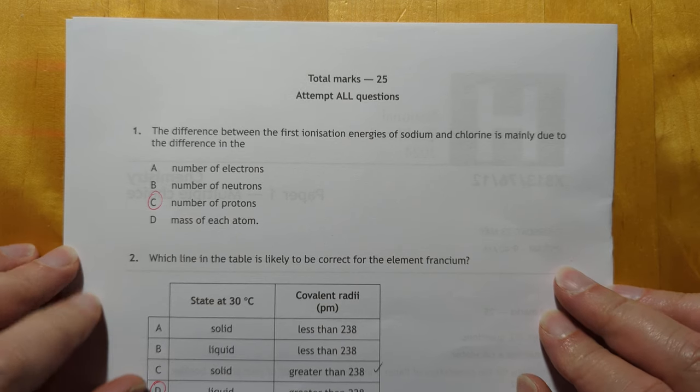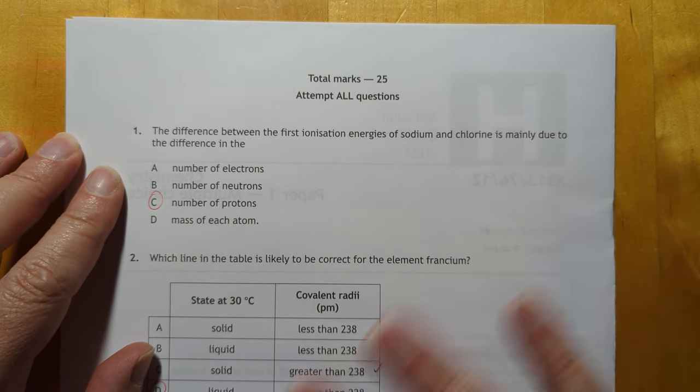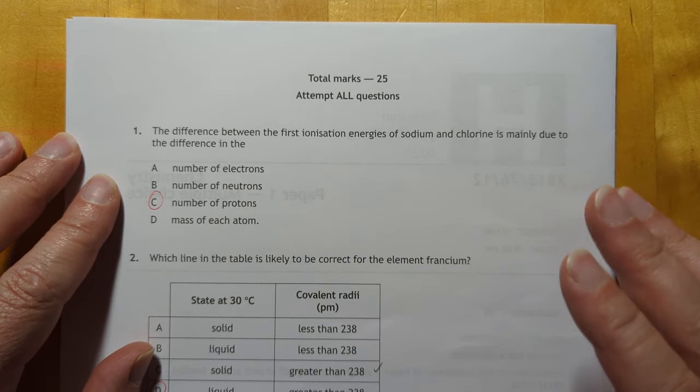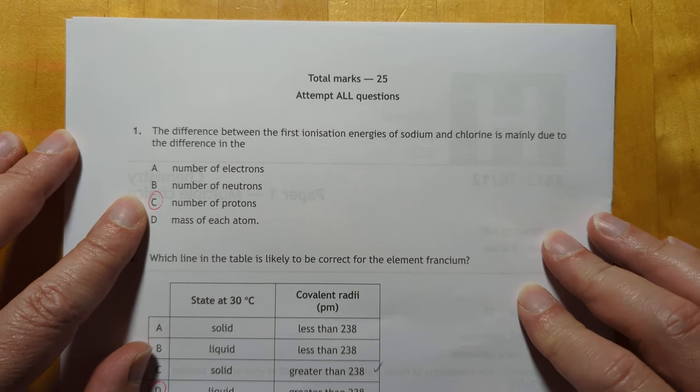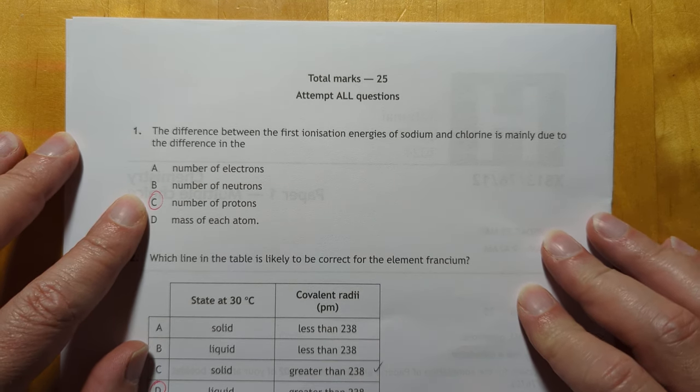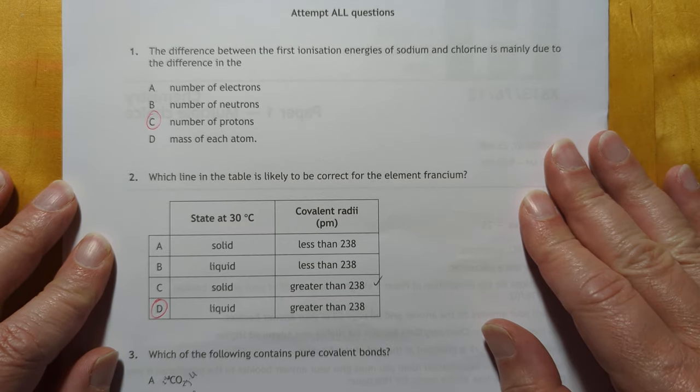Okay, number one. The difference between the first ionization energies of sodium and chlorine is mainly due to the difference in the number of protons. It pulls the electrons in tighter.